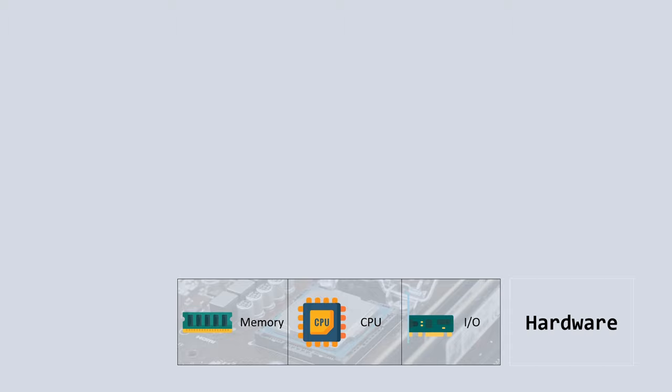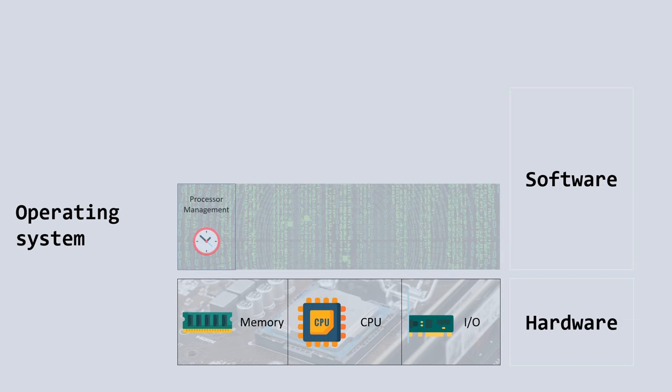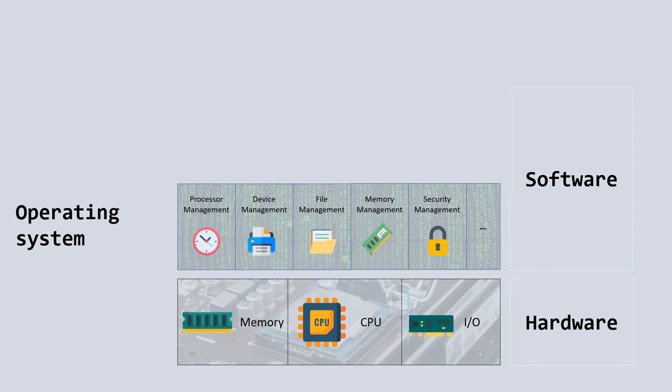Let's start at the bottom. A computer basically consists of memory, a CPU, and inputs and outputs such as a keyboard, graphics cards, and network adapters — all of these together make up the hardware of the computer. On top of the hardware we have the operating system, which directly interfaces with the hardware. When you start a computer, the BIOS — short for Basic Input Output System — on the motherboard starts the operating system from disk, which is the first software that is loaded.